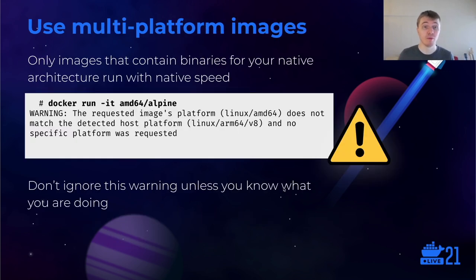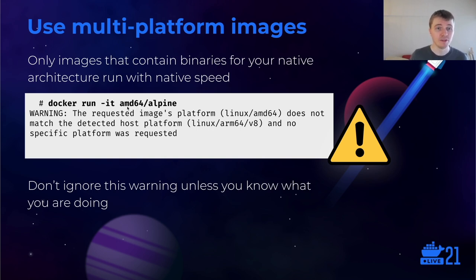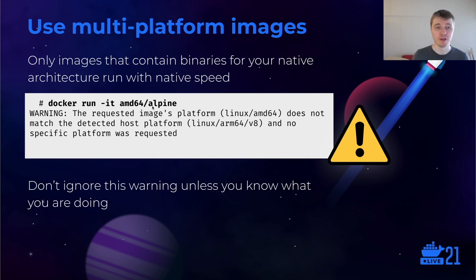If you're on an M1 with Docker Desktop running, the most important thing to understand is that only images containing binaries for the native architecture run at native speed. Here I'm running an Alpine image specific to AMD64, and Docker gives me a warning that my machine's platform does not match the image's platform. So what you want to do instead is not specify that architecture-specific image, but run the official Alpine image which is already multi-platform.